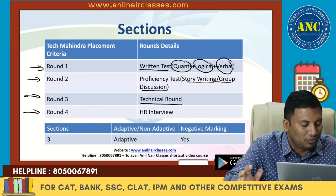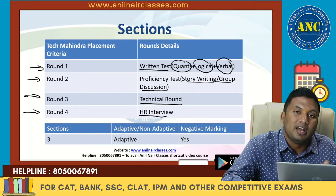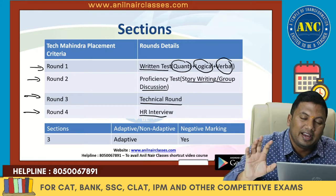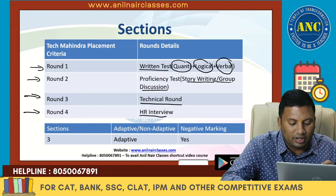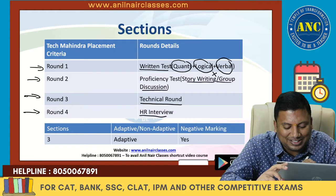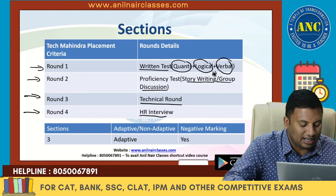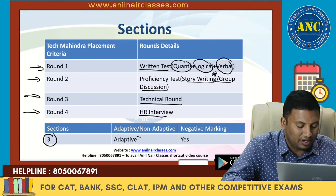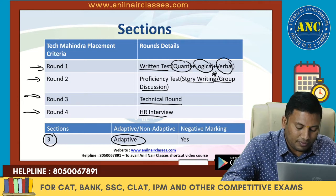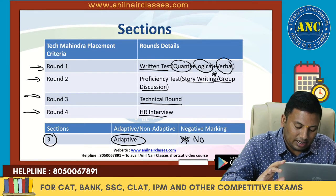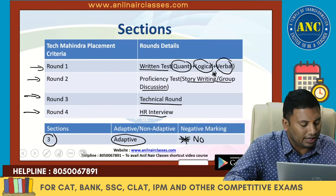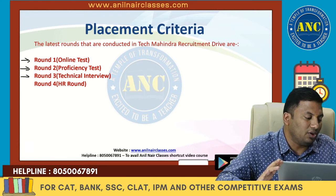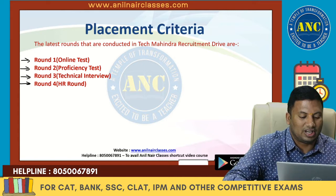Most importantly, what you wrote in the resume is what you are on a one-to-one basis, so round four is more personality driven. Round three checks whether you have very good knowledge of technical things. Round one covers quantitative reasoning and verbal. There is no negative marking, and the test is an adaptive test. So: round one is the online test, round two is the proficiency test, round three is the technical round, and round four is the HR round.